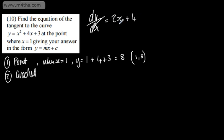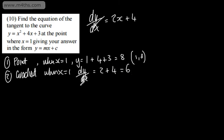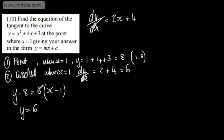I'm differentiating this. When x = 1, dy by dx is equal to 2 lots of 1 plus 4, which gives 6. Using the straight line equation, y subtract the y-coordinate of 8 equals the gradient of 6 times x minus the x-coordinate. So y = 6x, then minus 6 plus 8, which is plus 2. That is the equation of the tangent to the curve at that given point: y = 6x + 2.